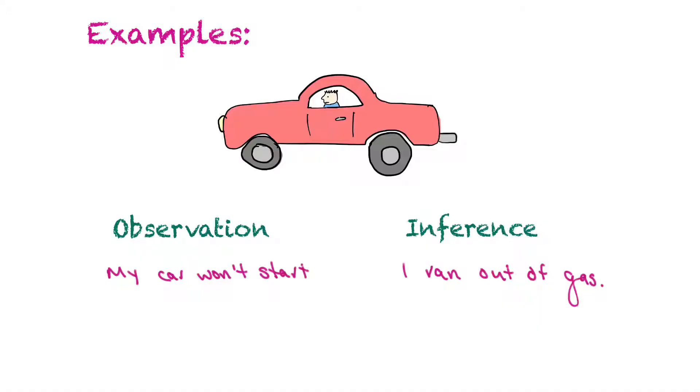The next example, we see a man sitting in his car, the man doesn't look very happy, it's not going anywhere. So the observation would be that my car won't start, and my inference could be I have run out of gas, so it won't start because there is no more gas in the tank.